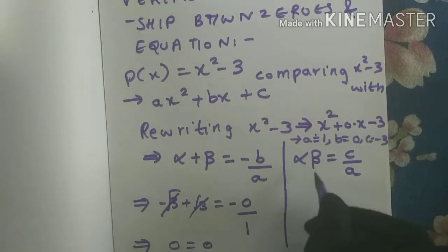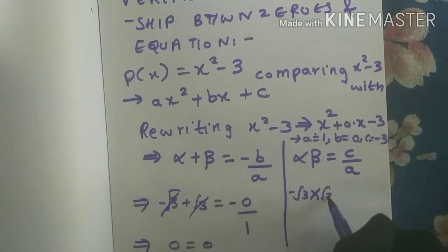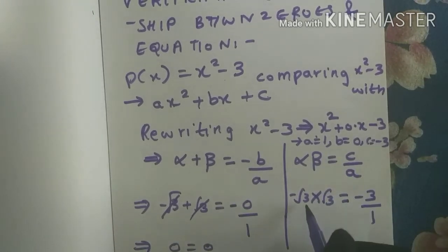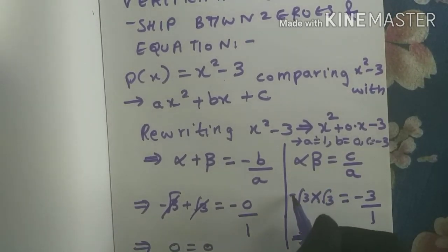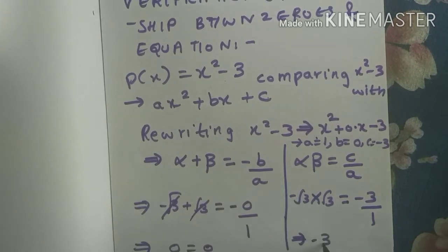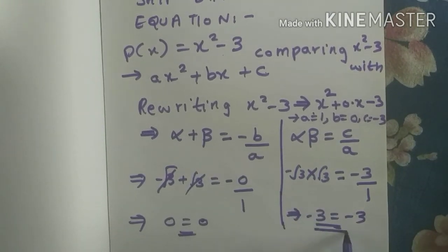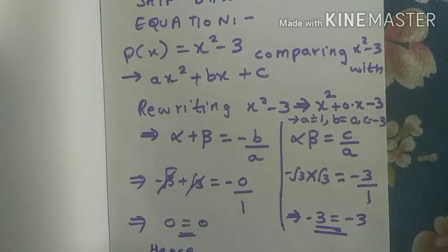For alpha times beta: minus root 3 times plus root 3 equals c by a, which is minus 3 by 1. Since root 3 times root 3 is 3, and minus times plus is minus, we get minus 3 equals minus 3. So LHS equals RHS here as well. Hence the relationship between zeros and coefficients is verified.